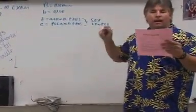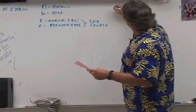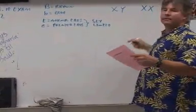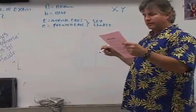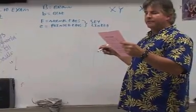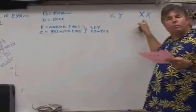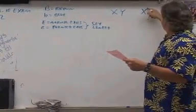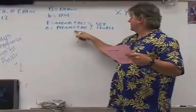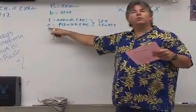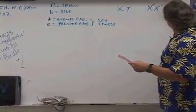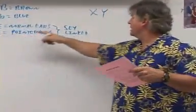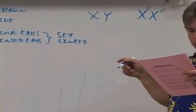Every time you see a question that says it's a sex-linked trait, the first thing you want to do is write XY for the father and XX for the mother. The question says a cross between a brown-eyed, pointed-eared female. The female has pointed ears, and you write the trait letter — little e for pointed ears — on the X. Since she shows pointed ears (the weak trait), she must have two of them: X-little-e, X-little-e. You always put the trait above the X for a sex-linked trait.